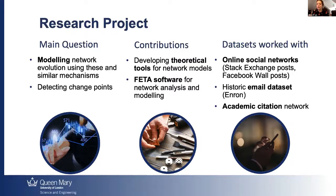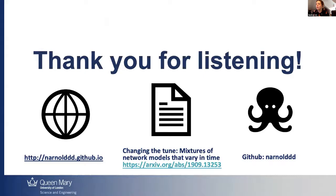We've been looking at a historic email dataset examining the effects of large events on a company's email network. You could also use this to study whether introducing a new social network feature changes interactions between users. So far, we've developed software called FETA — Framework for Evolving Topology Analysis — which is a toolkit for working with network models and real data. We've worked with a wide variety of datasets from online social networks to citation networks. There's a link to a recent preprint available. Thank you for listening.